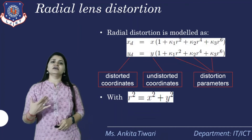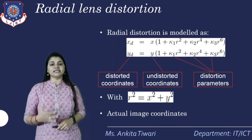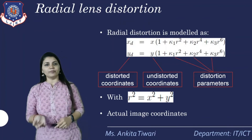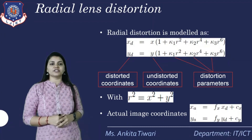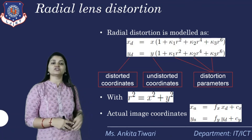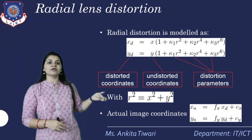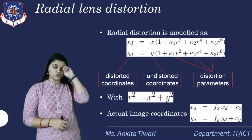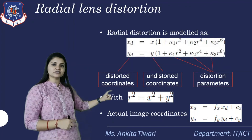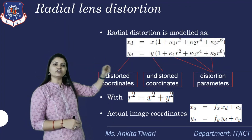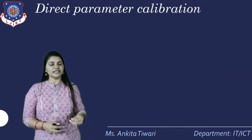The value r is defined as r² = x² + y², representing actual image coordinates for a particular pixel in the lens. The actual image coordinates xa and ya are: xa = fx·xd + cx and ya = fy·yd + cy, incorporating the camera parameters and the radial distortion values xd and yd.